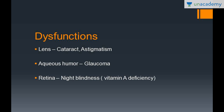The retina is the photosensitive layer. Looking at dysfunctions: when the lens becomes opaque, you have a condition called cataract. When the lens doesn't have a single focal length but multiple focal planes across different parts, this condition is known as astigmatism. An increase in aqueous humor leads to increased intraocular tension and a condition called glaucoma. For the retina, night blindness is seen in retinal dysfunction due to vitamin A deficiency — there is a lack of the pigment rhodopsin, which is used for vision in dim light, causing night blindness.